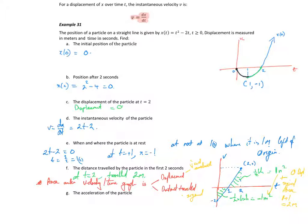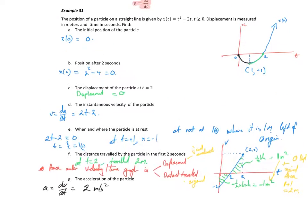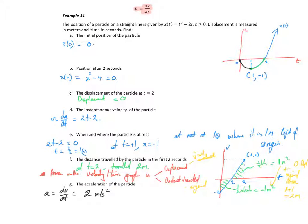Last one for kinematics: the acceleration of the particle. Acceleration A equals dV/dt, which is equal to 2 metres per second squared.